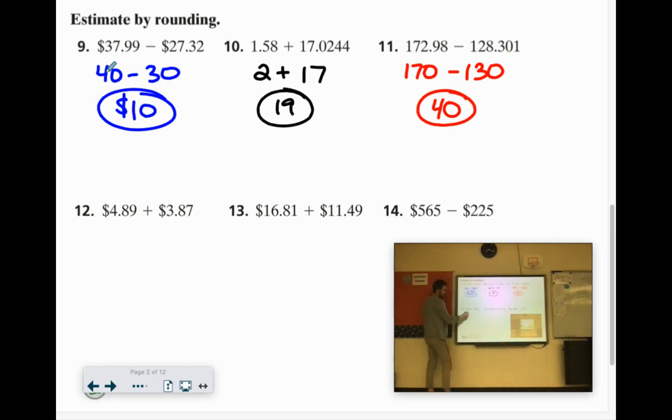4.89, let's call it 5 bucks. 3.87, let's call it 4 bucks. 5 plus 4 would give us $9. It's going to be a little less than that, but this gives us an estimate.